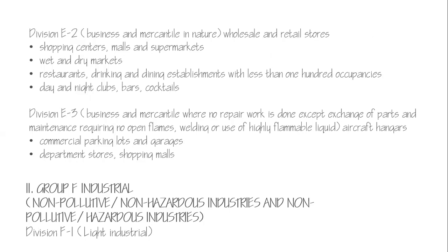Group E has three divisions: E1, E2, and E3. Division E2 is business and mercantile — wholesale and retail in nature — covering shopping centers, malls, supermarkets, dry markets, and restaurants. If someone asks which division a mall falls under the National Building Code, that's Group E, Division E2. Day and night clubs, bars, and cocktail establishments also fall under Division E2.